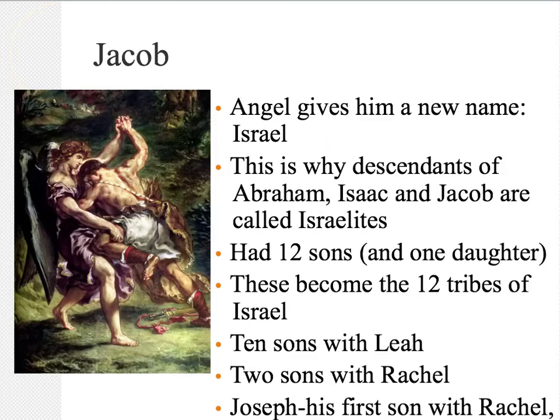Jacob had 12 sons and one daughter. These would become the 12 tribes of Israel. When the Israelites grew in number, they couldn't all be unified anymore, and so they divided into 12 tribes, each named after a son of Jacob. Jacob had 10 of his sons with his wife Leah. Leah was his first wife, but he never intended to marry her — he wanted to marry her little sister Rachel.